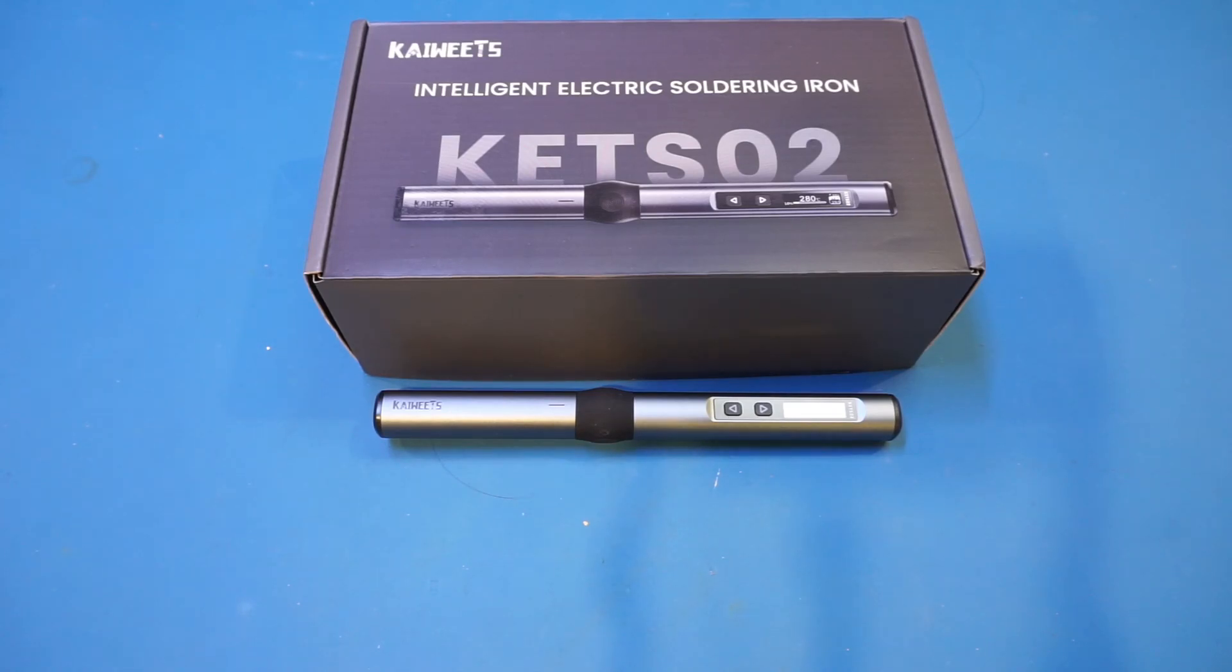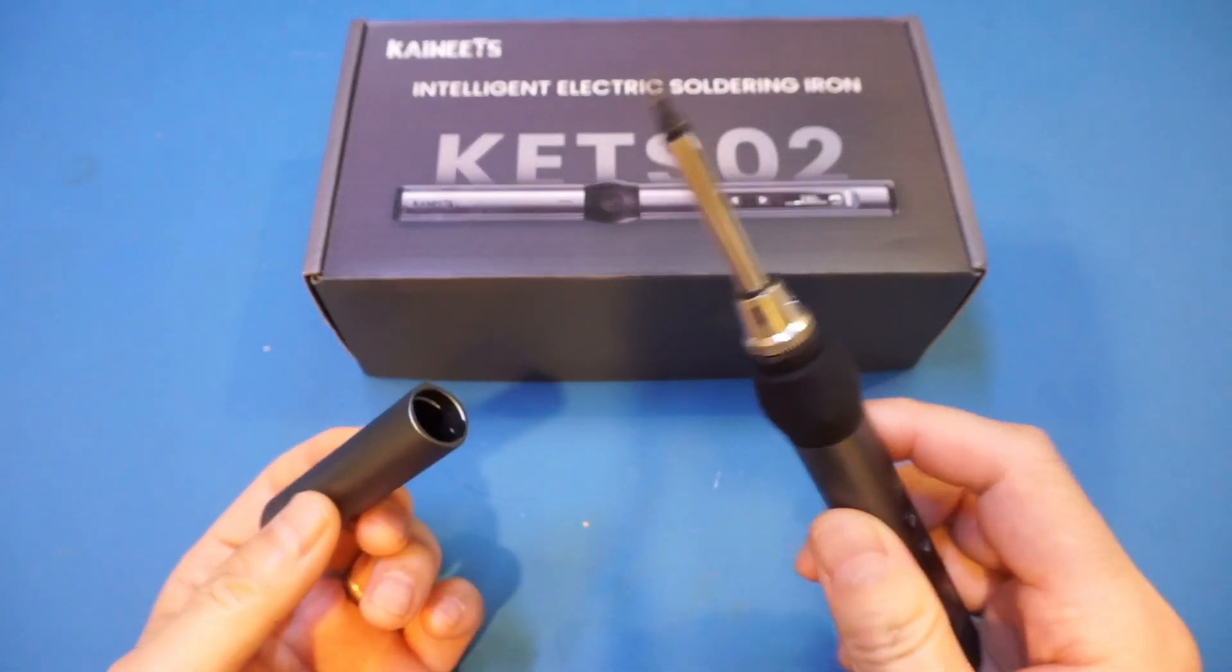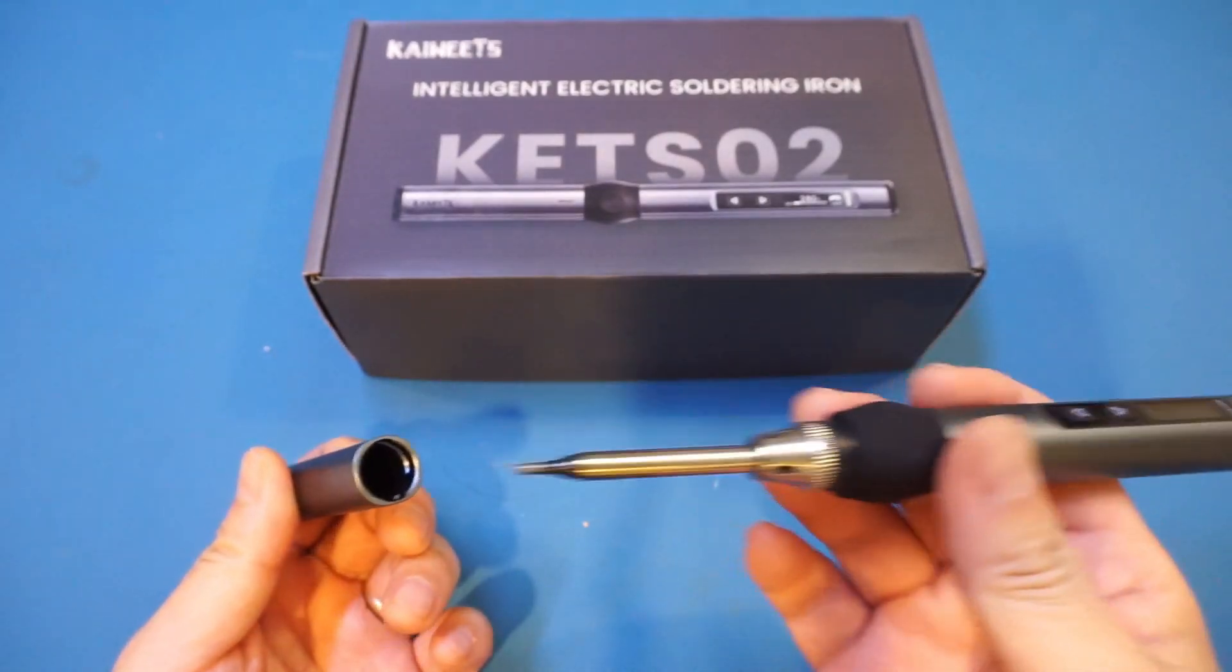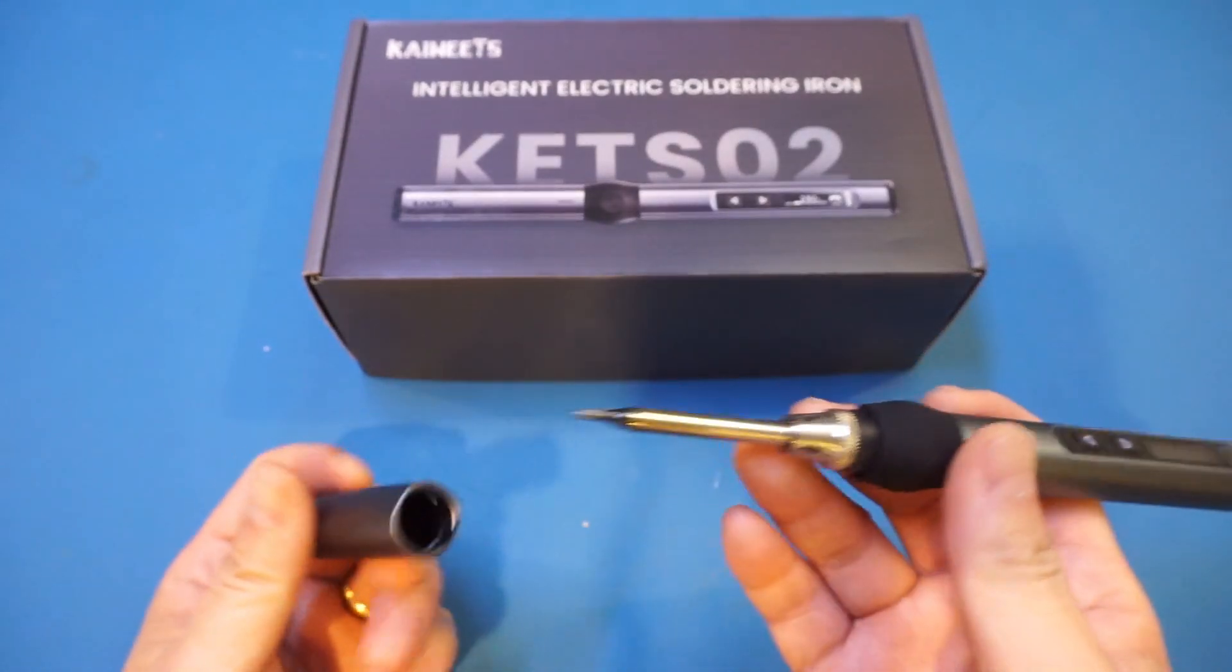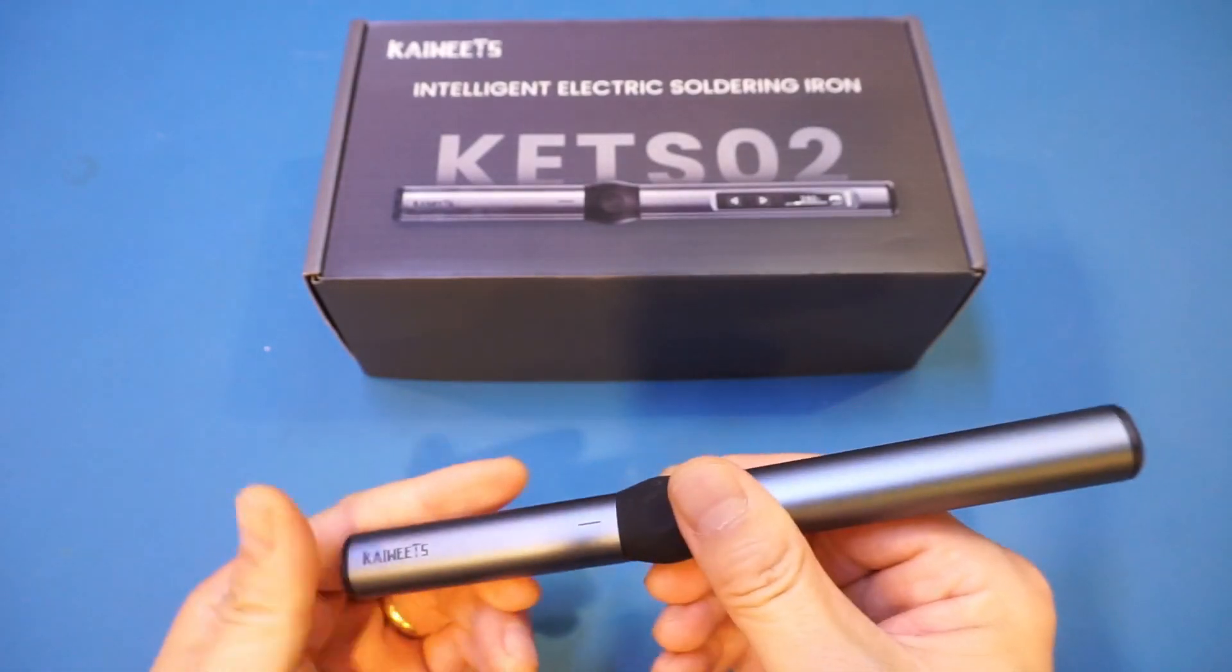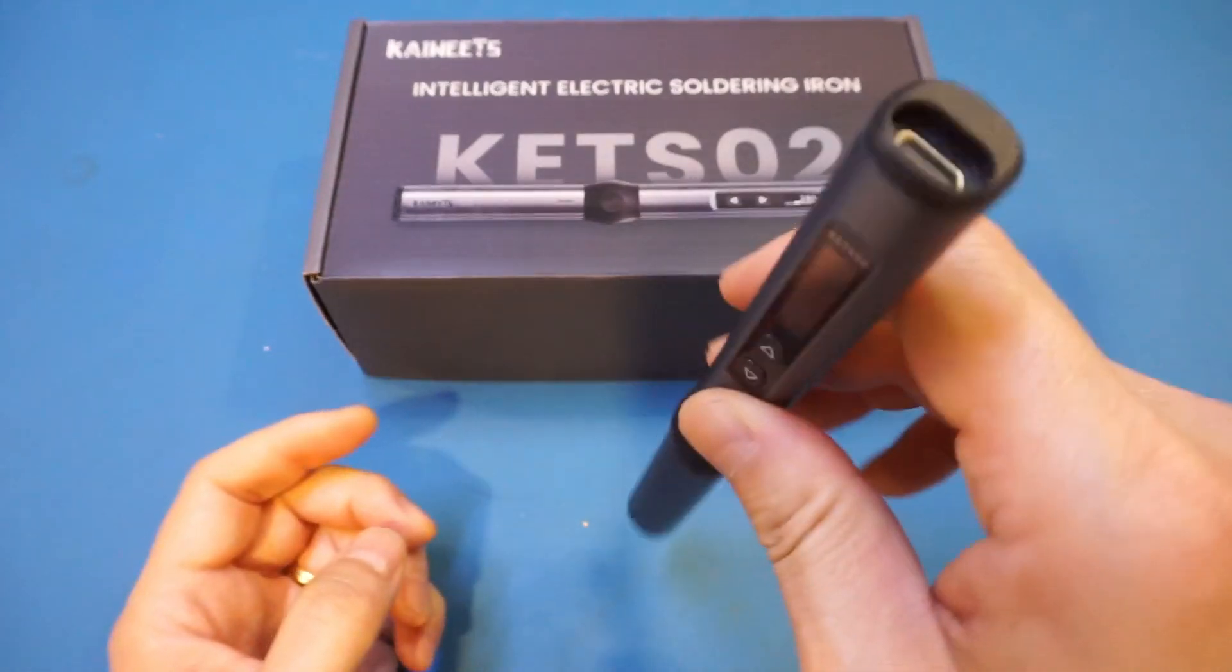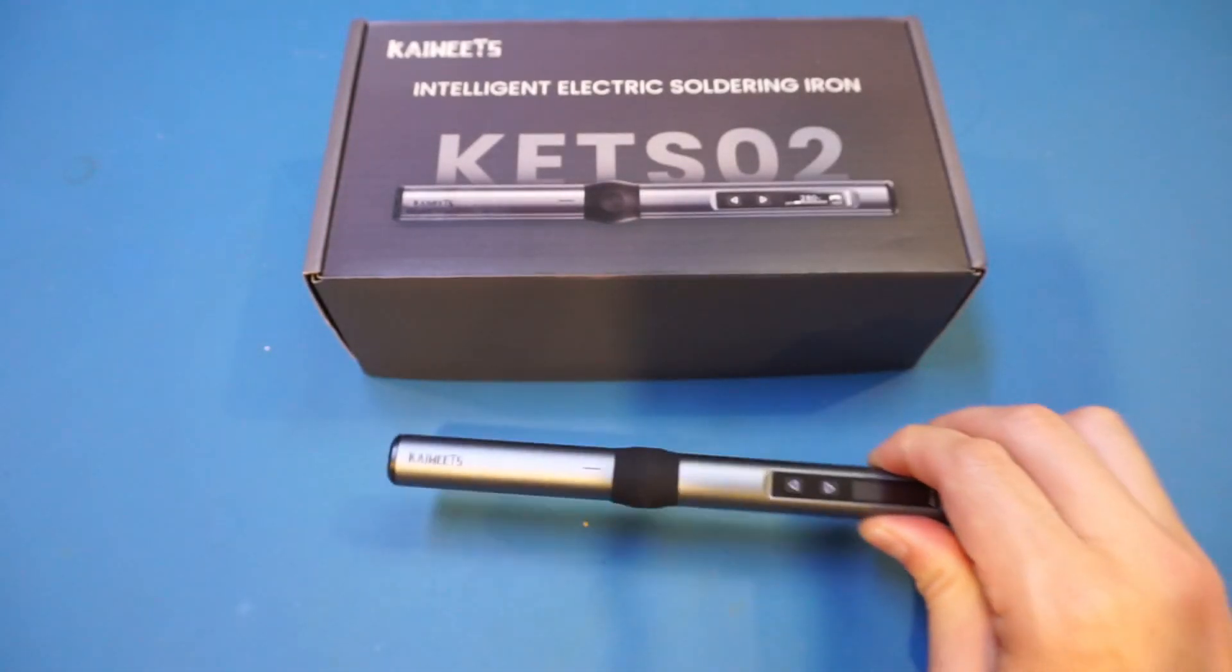One nice touch of this soldering iron is that it actually has a cap. I actually like this a lot, especially for a portable one, as it can be carried around easily. When the iron is still hot, you don't want to touch it, so you can put the cap on. The cap twists tight so it won't come loose in your pocket. The case and the cap are made of aluminum.